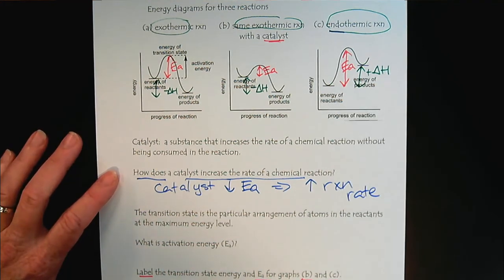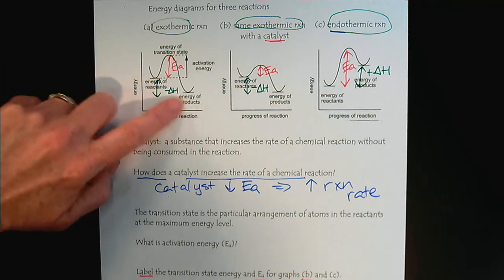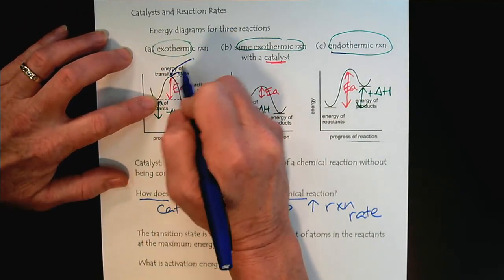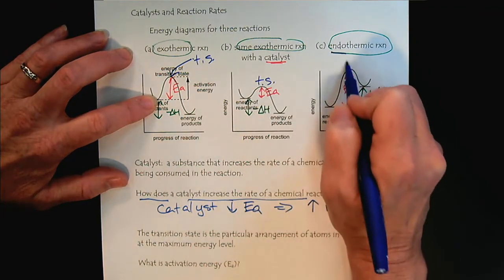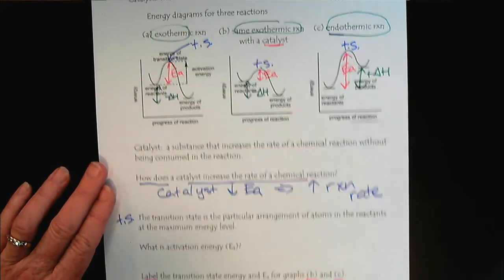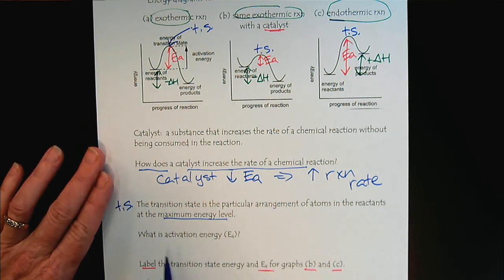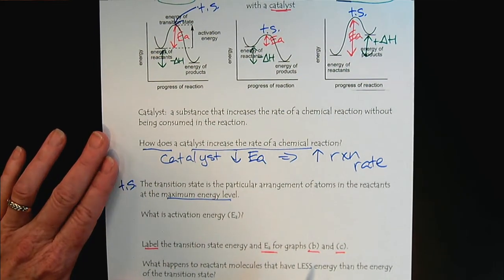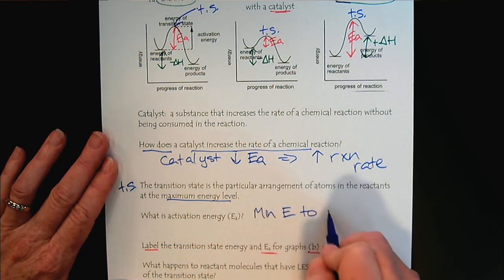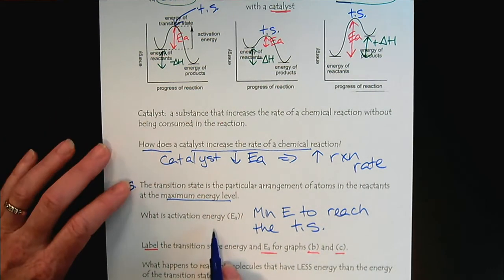When labeling reaction energy diagrams, we have two things to consider — everything hinges on the reactants. The enthalpy is the difference between reactants and products. The activation energy is from the reactants to the transition state. The transition state, symbolized TS, is the particular arrangement of atoms in the reactants at the maximum energy level. The activation energy is the minimum energy required to reach the transition state.